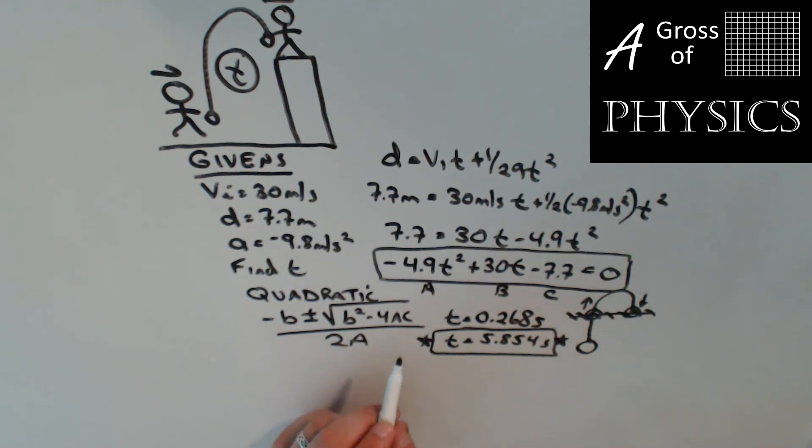Now some problems may give you a negative time for the quadratic. Well, if there's a negative time, that's going to be one that we eliminate immediately. But in some cases, you'll have two times that are positive, two times that are feasible, and you'll need to determine which one is appropriate.